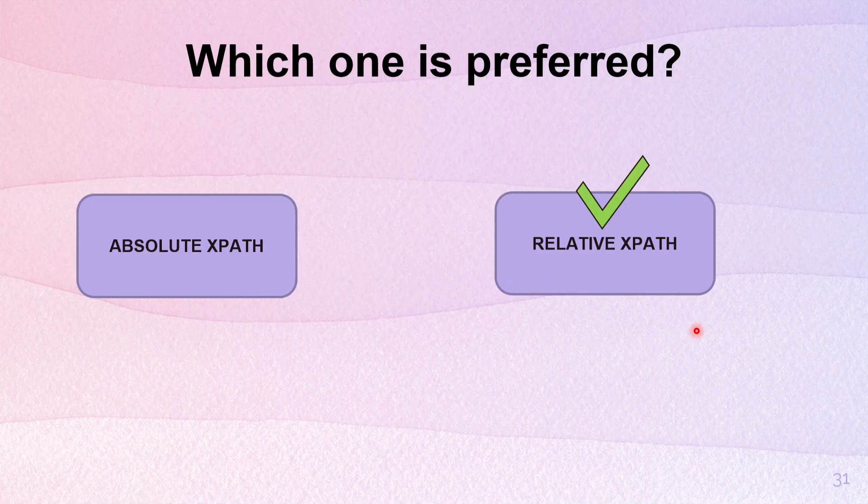This is all we studied in this tutorial. We studied what is XPath, about the CrowPath plugin, the difference between absolute XPath and relative XPath, and which one is preferred. In the next tutorial, we will learn about the functions of XPath.